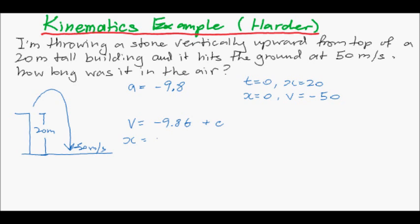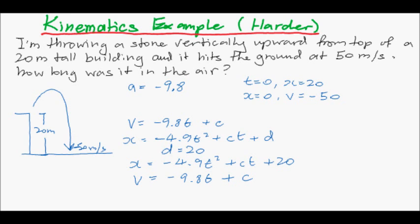We're interested in displacement as well. So, x, you just have to integrate that. Negative 4.9t squared plus ct plus d. Now we've got two unknowns inside our displacement. However, here we know that at t equals 0, x is 20, so we can use this fact and do something with it.